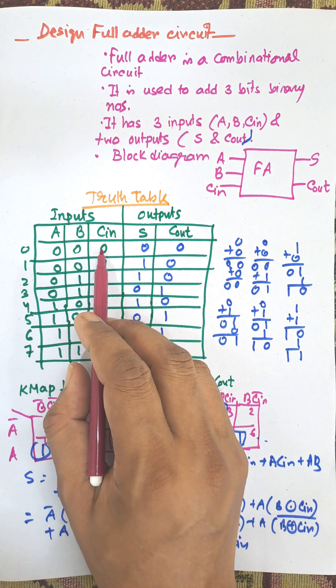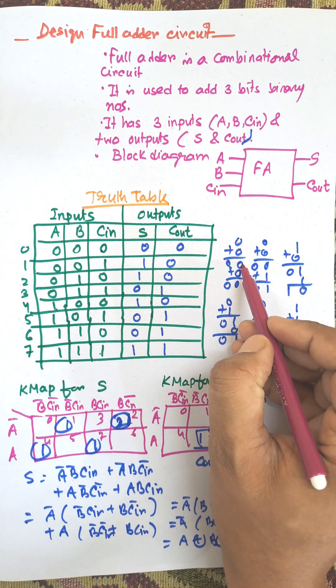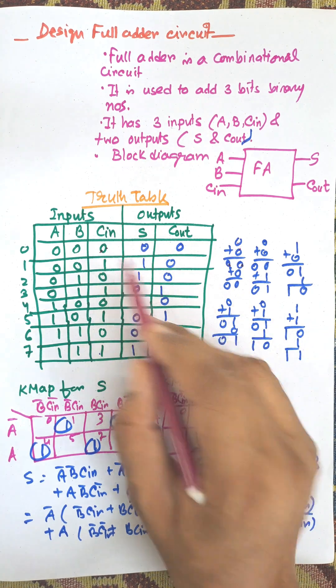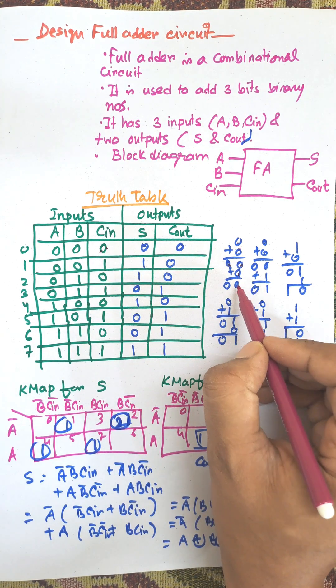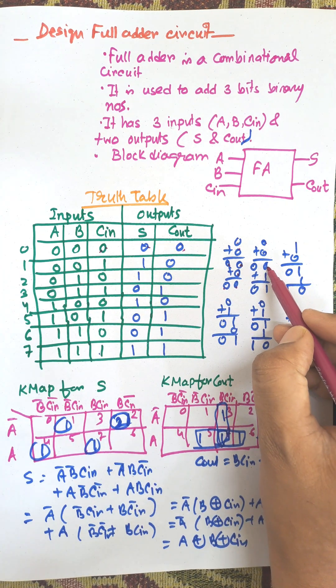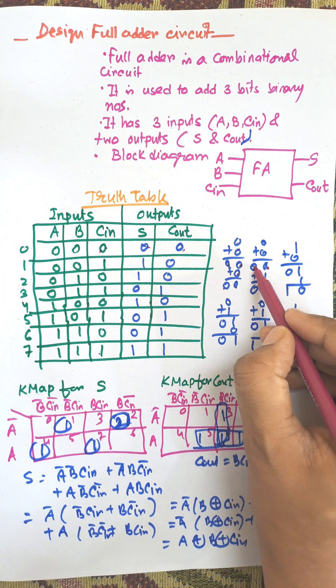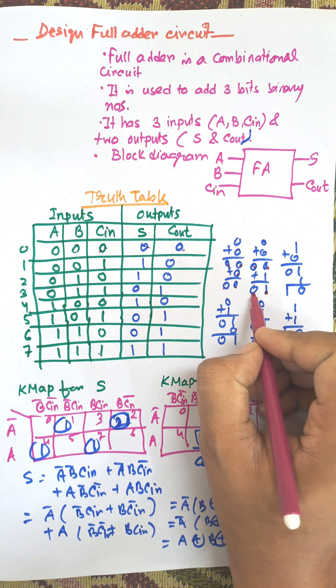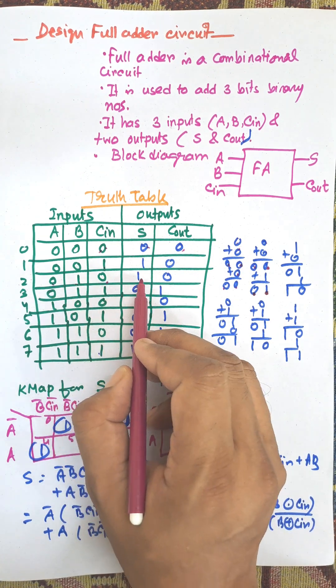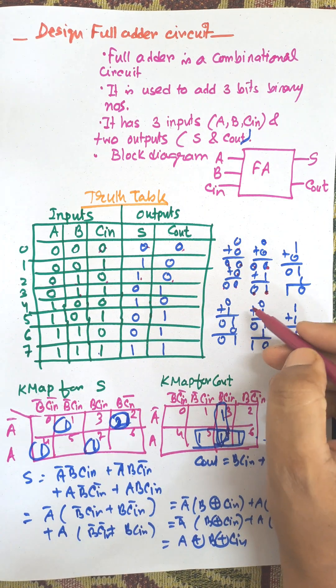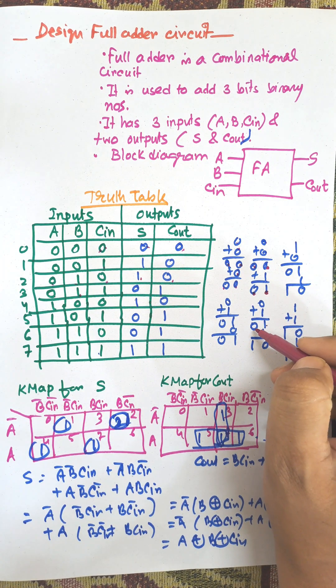For 0, 0, 0: 0 plus 0 equals 0, sum 0, carry 0. Then next 1 is added, that is C in. 0 plus 0 plus 1 equals sum 1, carry 0. Similarly for 0, 1, 0, it is also sum 1, carry 0. For 0, 1, 1: 0 plus 1 plus 1 equals sum 0 and carry 1.